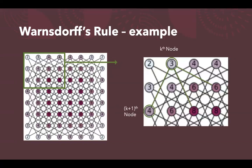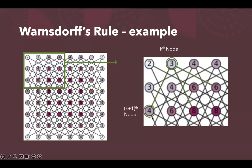To look at this in more detail, here's an example of a knight's graph where each node is labeled with the number of moves you can take from it. Looking at a node labeled 3, it has three moves available: to nodes labeled 4, 8, and 6. According to Warnsdorf's rule, you move to the node with the fewest future moves, which is the node labeled 4. After moving to that 4, you adjust all neighboring nodes — for example, the node labeled 6 would be reduced to 5, because the path to the 4 is no longer valid.